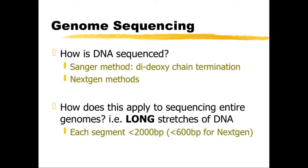So how is DNA sequenced? The classic approach is what's known as the Sanger method, the dideoxy chain termination method. More recently, so-called next generation methods have been developed, and these are highly automated, very fast and very cheap. The problem, however, with both of these methods is that they're only able to sequence relatively short stretches of DNA.